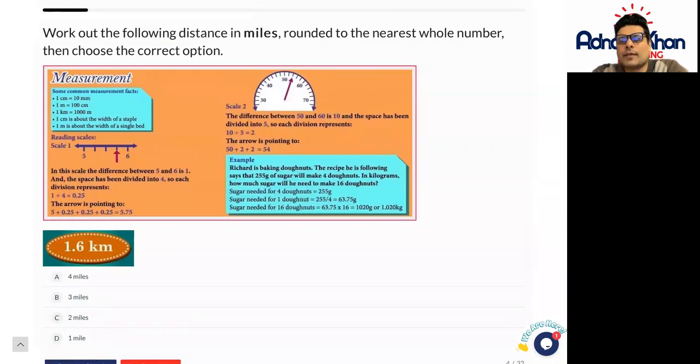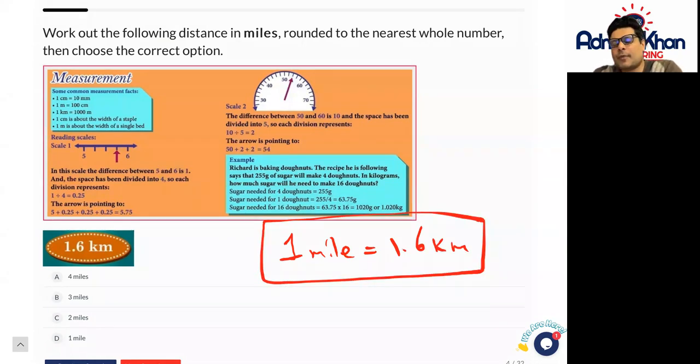So work out the following distance in miles rounded to the nearest whole number. So in this case, we know from before, as mentioned, that in one mile, you have roughly 1.6 kilometres, roughly speaking. Okay, so write down all those measurements that we've been through before, and try your best with these questions.